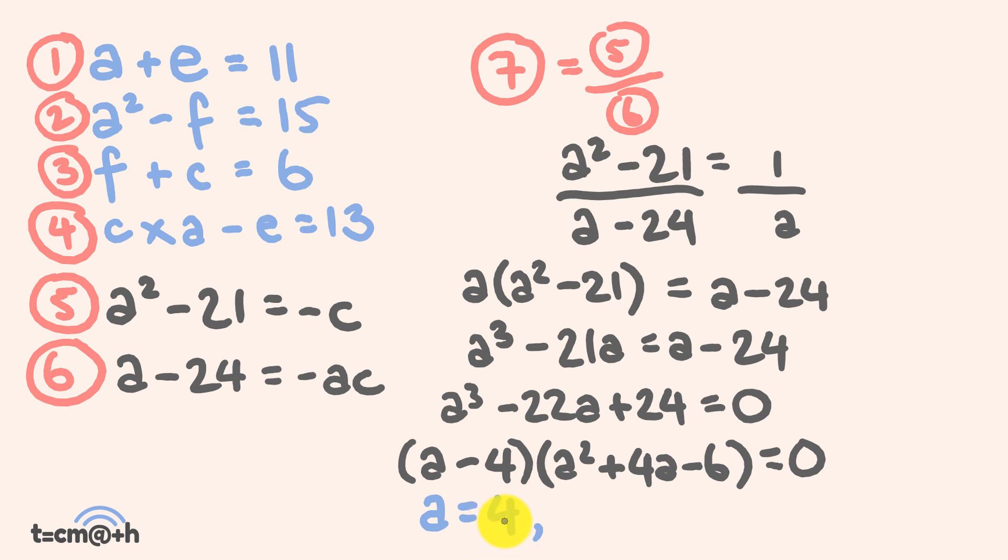But interestingly enough, it also gives us a couple of other possibilities. If we were to go through and use the quadratic formula on this one, we could find out that a could also equal -2 ± √10, where we have two different values. Both of which could actually then be substituted into these equations here, and we would end up with these very specific answers. You could work out what these are, substitute in, and get your different values for a, e, f, c.